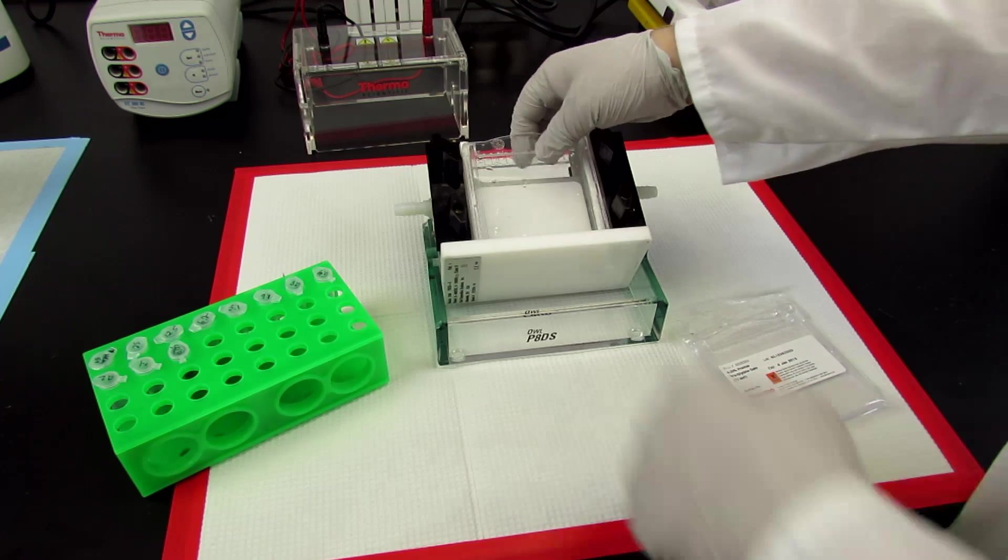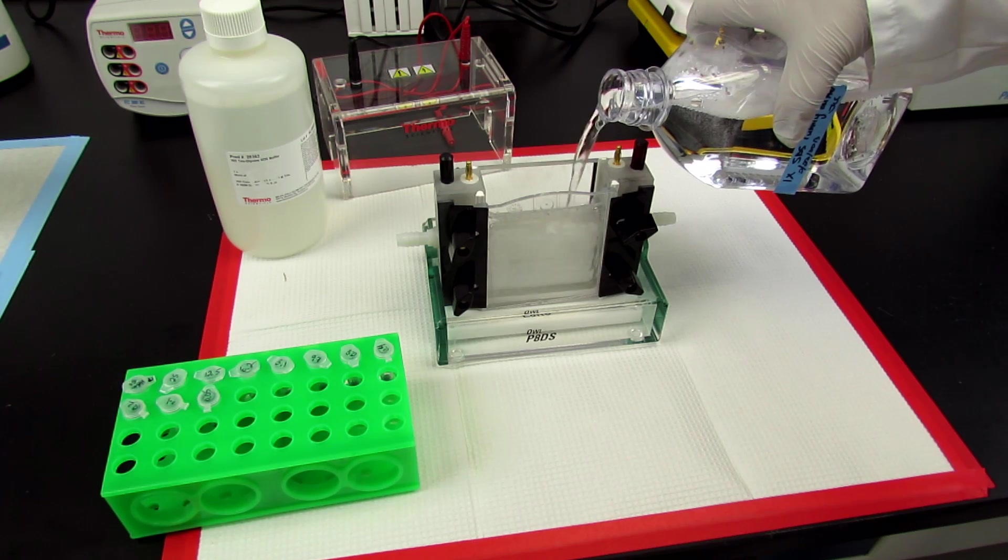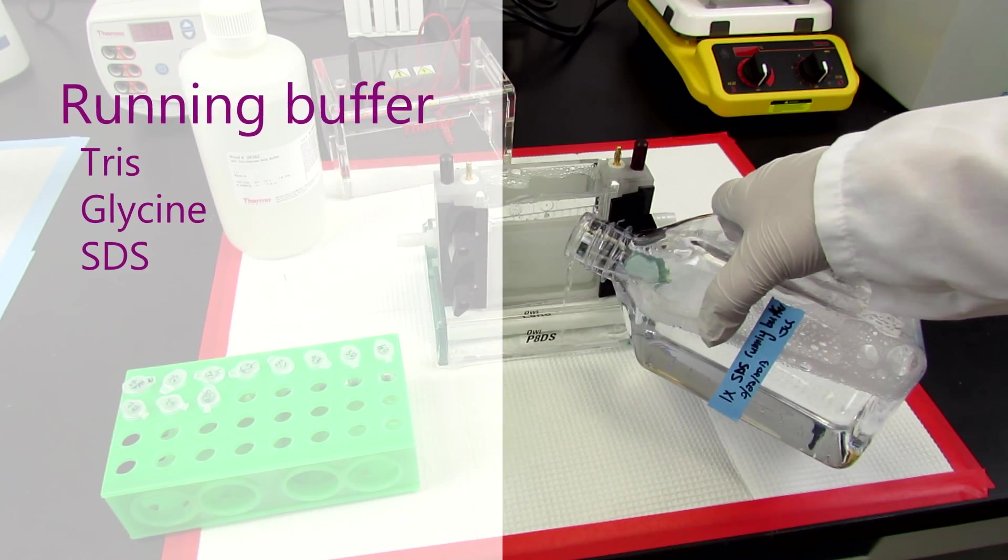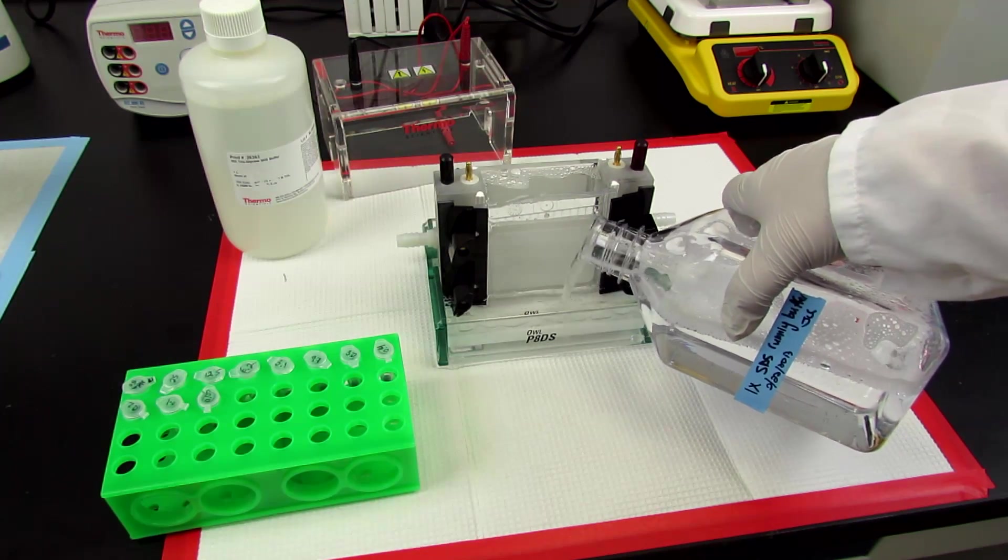Place a gel into an electrophoresis unit and fill the upper and lower buffer tanks of the unit with a running buffer made of Tris, glycine, and SDS to enable proper flow of the electric current through the gel.